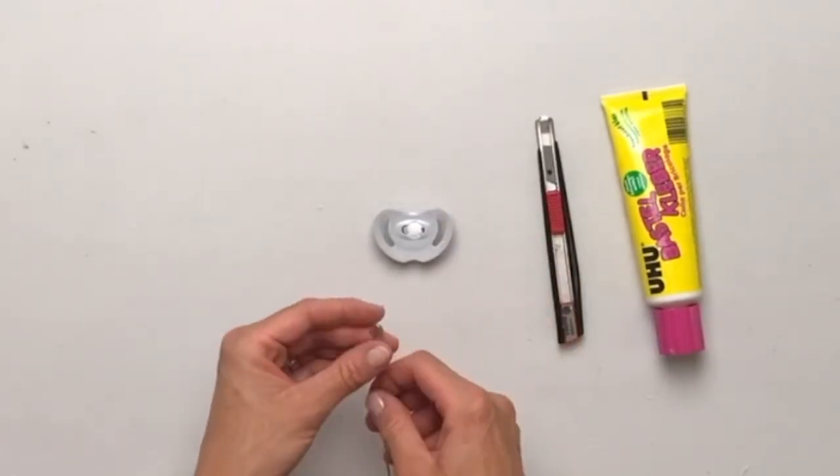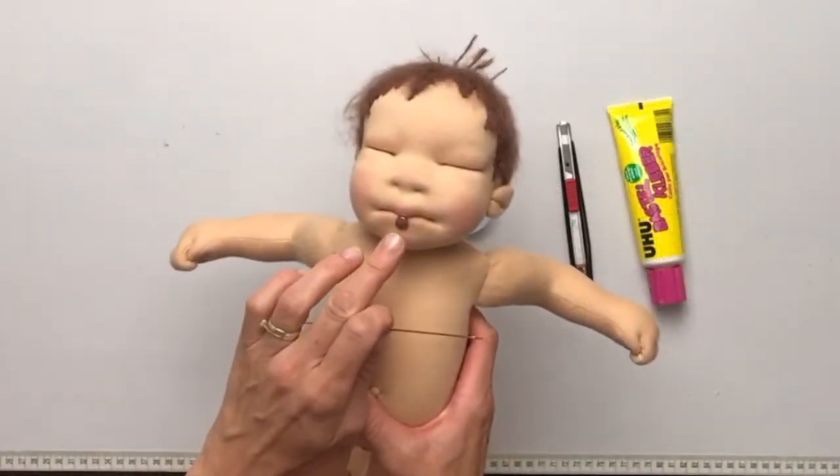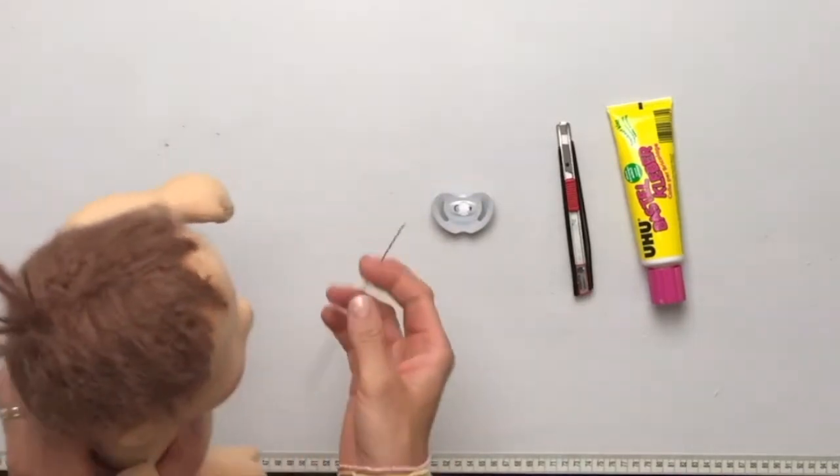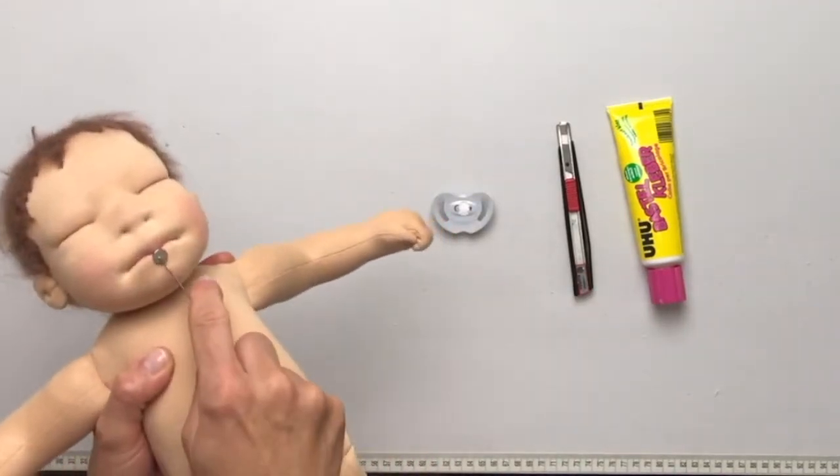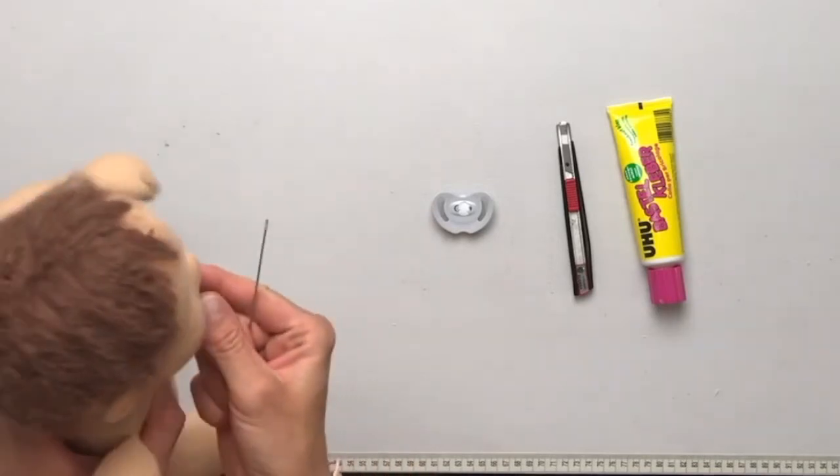Now put the magnet on top. Be careful where you place it though. You should have a look at how it fits on the doll. So the magnet has to sit on the pacifier with the right side first so that the pacifier will actually stay on the doll.